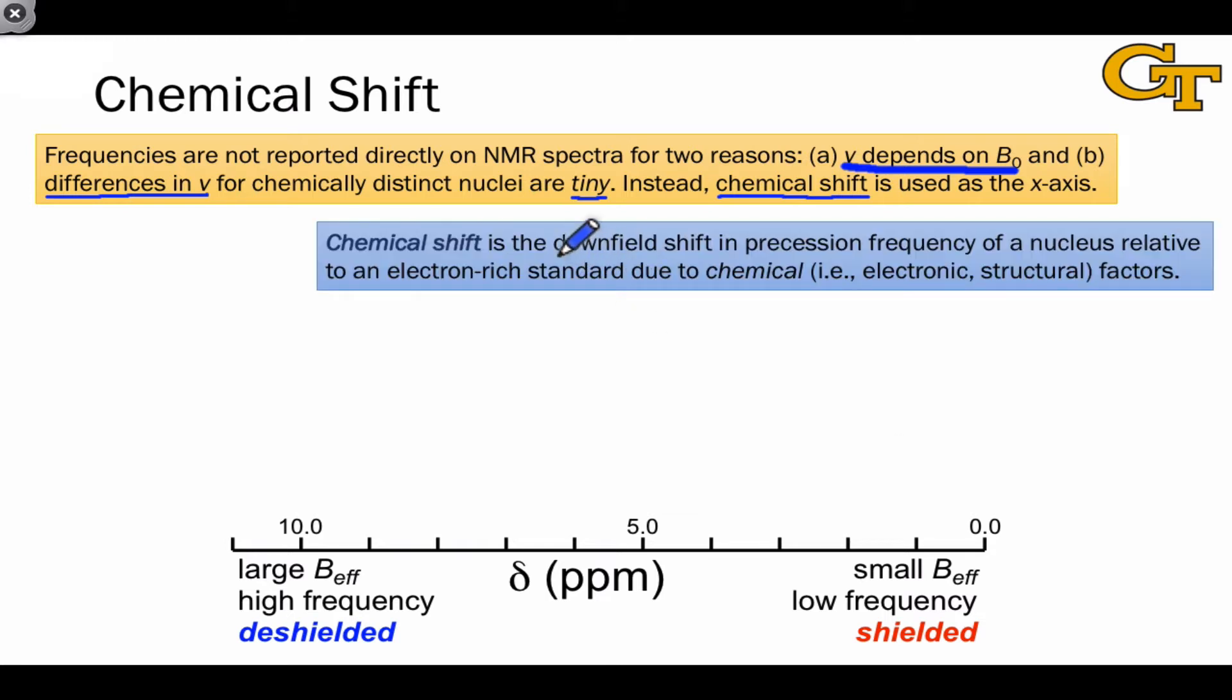Chemical shift is defined as the downfield shift in precession frequency of a nucleus relative to an electron-rich standard, one that's heavily shielded, due to chemical factors—differences in the electronic environment of the nucleus and differences in structure.